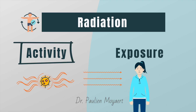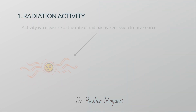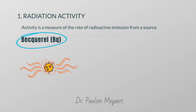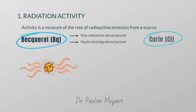Let's start with activity. Activity is a measure of the rate of radioactive emission from a source. The international unit of activity is the Becquerel, which is defined as one radioactive decay per second, or the number of nuclei disintegrations per second. In other words, the Becquerel counts how many particles or photons are emitted per second by a source. An older and still often used measure of activity is the Curie, and this equals 37 billion Becquerels.